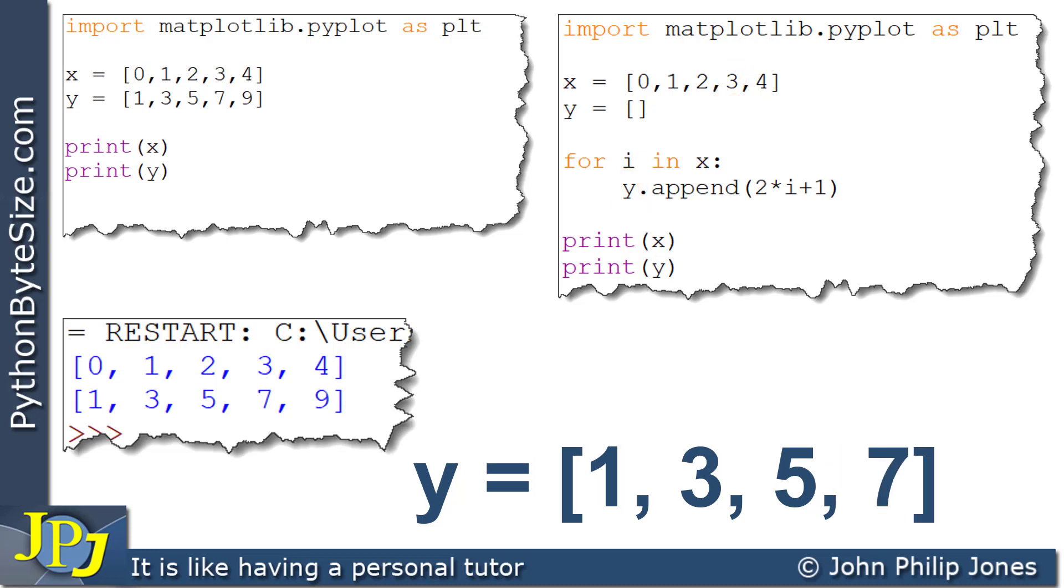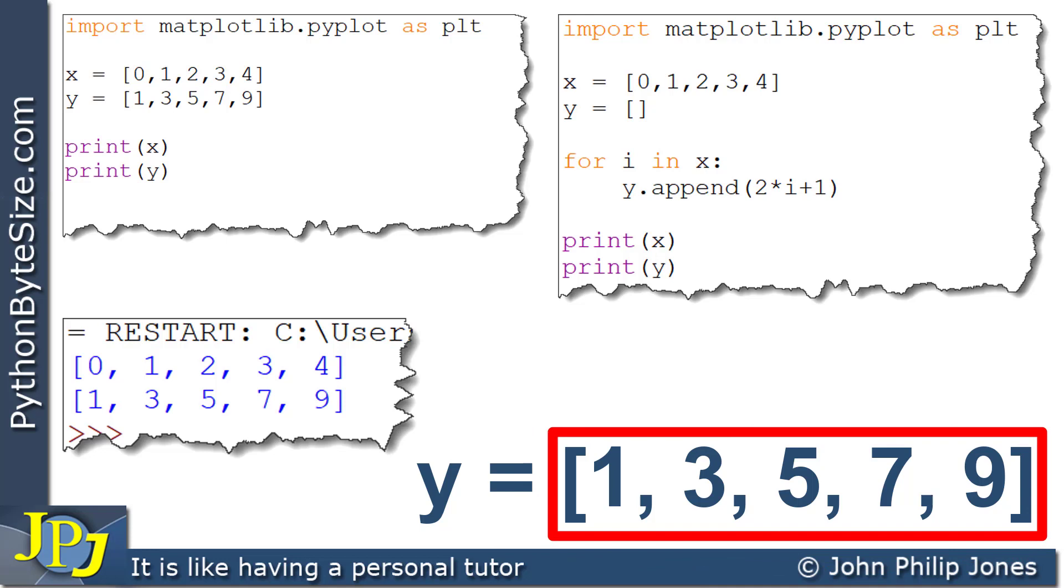What's going to happen, we're going to go around the loop again. So we pick up 4 this time. This becomes 2 times 4, plus 1 is 9. And 9 is appended to y. So you can see below, we now get y. And y contains 1, 3, 5, 7, and 9.